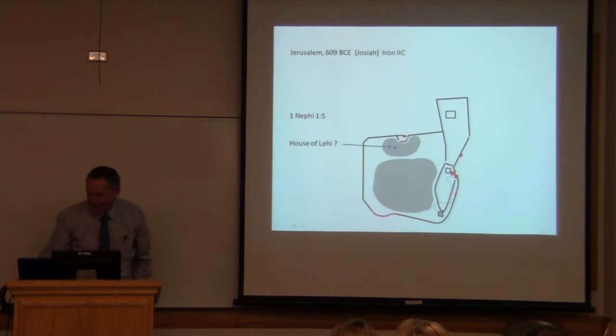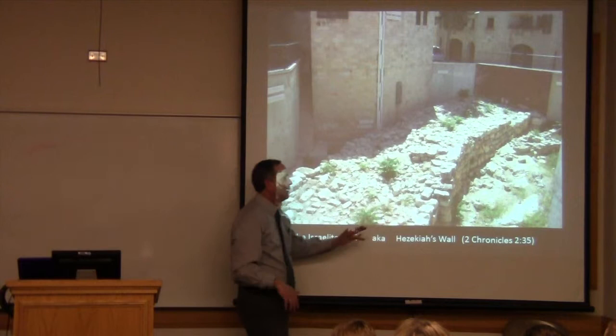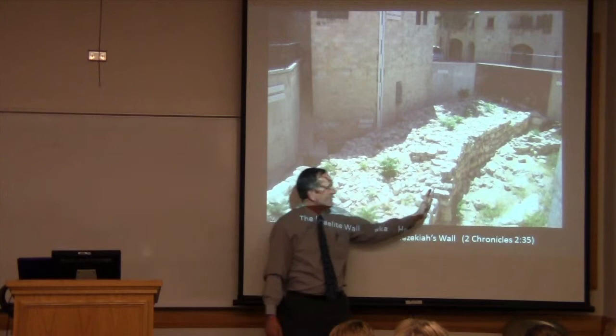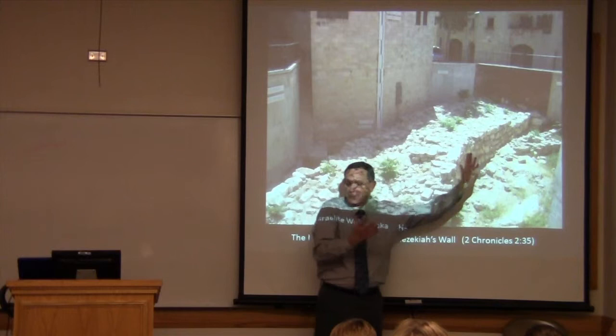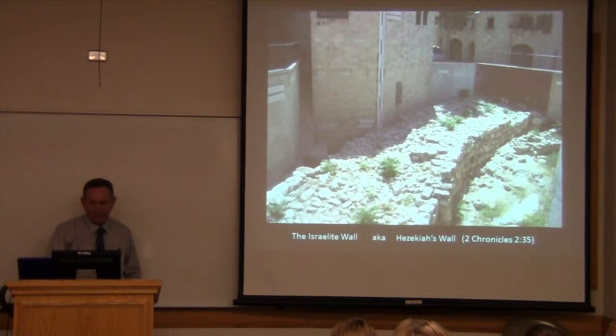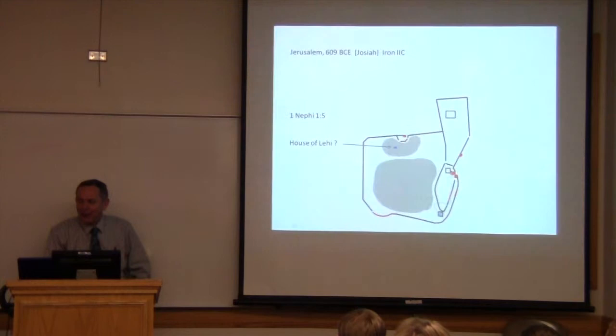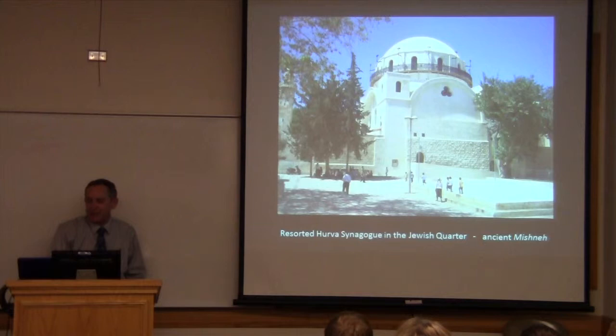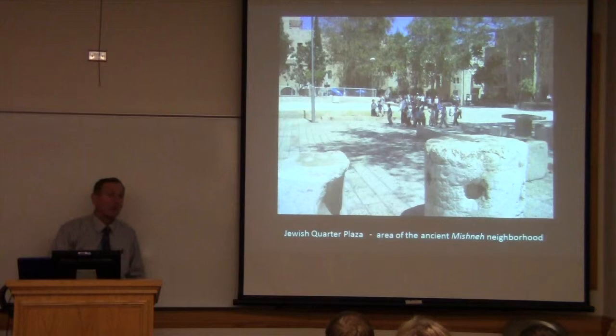So when I intimated to you last week that maybe you could imagine Nephi hiding outside this wall, we'd have to put that 15 meters this way because this little nix in here would have actually been inside that other newer wall. There in what is now the Jewish quarter would be the general area of the ancient Mishneh. We hope when you're wandering around in Jerusalem, you don't forget to think of the Book of Mormon and how it starts out in Jerusalem.